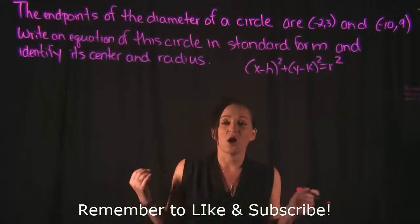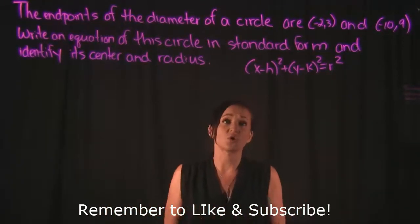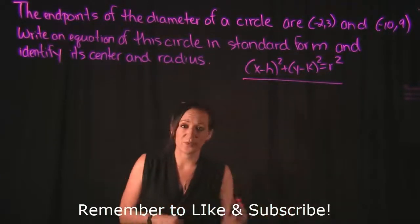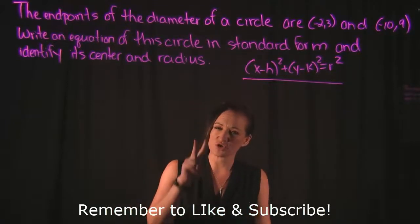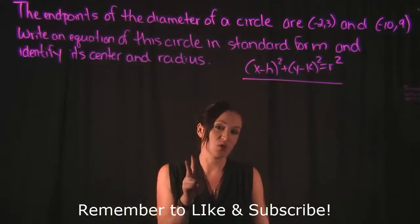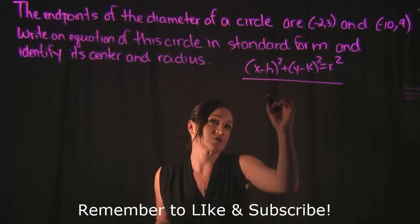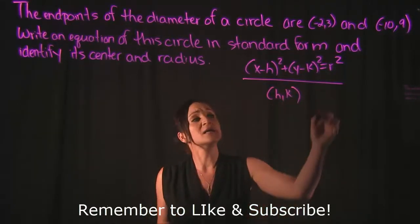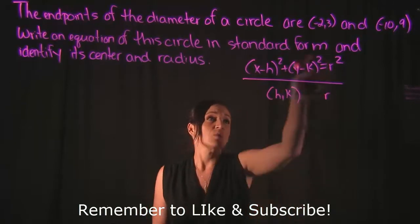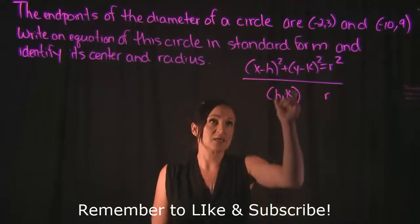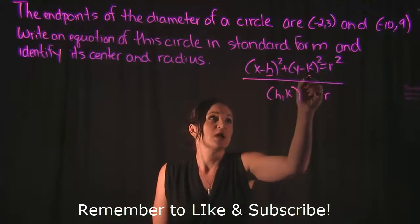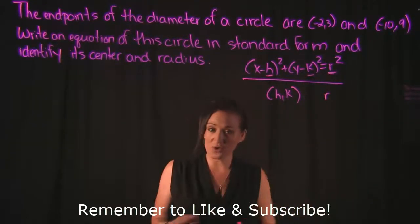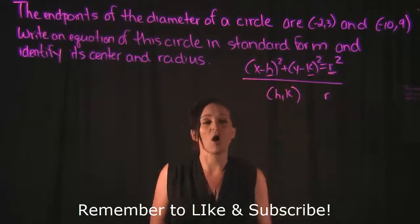We're creating an equation of a circle in standard form, which I've put on the board. When writing an equation of a circle, there are two main things you need to know: the center of the circle, represented by h and k, and the radius. So the things you're plugging into the equation are h, k, and r.